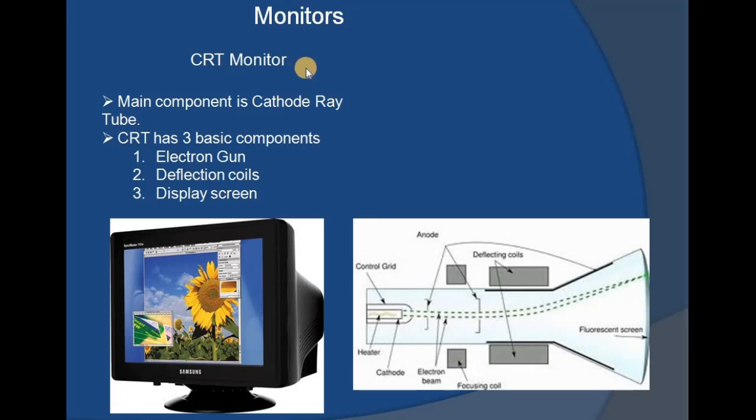Monitors are the most widely used output devices because whenever we interact with a computer, the basic element required is the monitor. Together with the keyboard, it allows us to properly interact with the computer and receive information. Monitors can be categorized into two types: CRT monitors and LCD monitors.